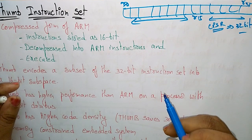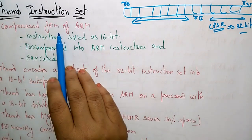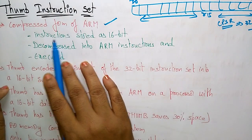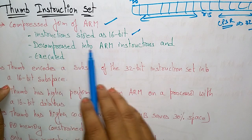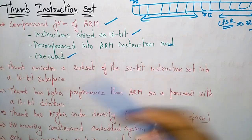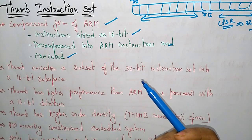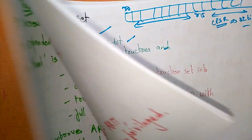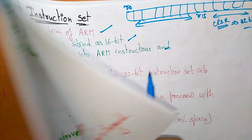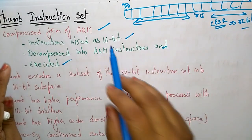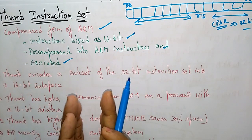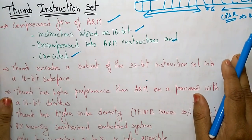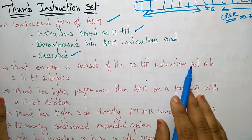The Thumb instruction set is a compressed form of ARM. Instructions are stored as 16-bit and decompressed into ARM instructions before execution. As shown in the previous diagram, the process is: instruction stored as 16-bit → decompressed into ARM instruction via a decoder → then finally executed.